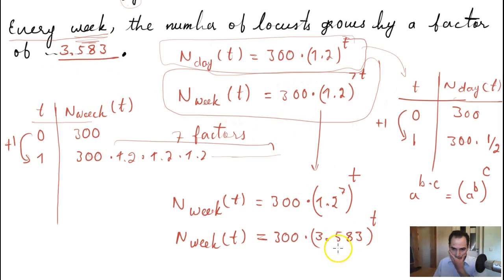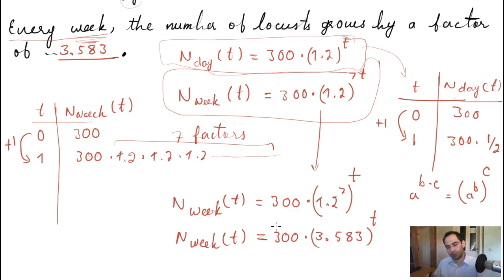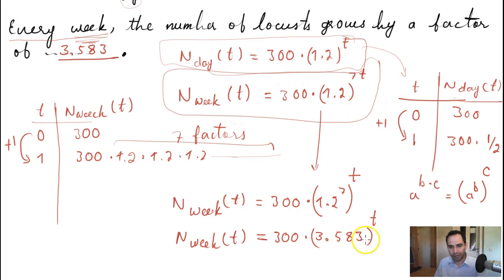That means every week the number of locusts is growing 3.583 times larger. You can of course express this in terms of percent if you like, but basically 3.583 is the common ratio of the new weekly function that we made based on the original daily function. Thank you.